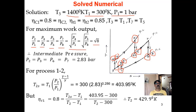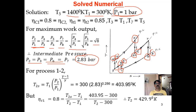Since P1 equals P3, both are 1 bar. Therefore P2 equals P3 equals root 8, which is 2.83 bar. Since P2 equals P3, and on the same constant-pressure line you have points 6 and 7, so P6 equals P7, which is also 2.83 bar. This is how you find the intermediate pressures.